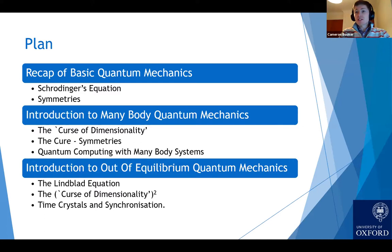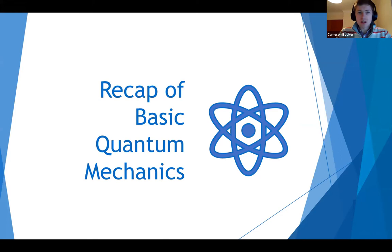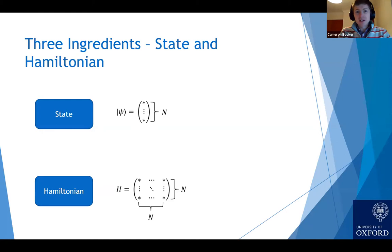I'm going to gloss over a lot of the details — if anything doesn't make sense, stick a question in the chat. For the purposes of my talk, there are three ingredients we need for quantum mechanics. The first is the state, which is basically just a vector, and it describes everything about the system at a given time — its position, velocity, everything is described by this vector.